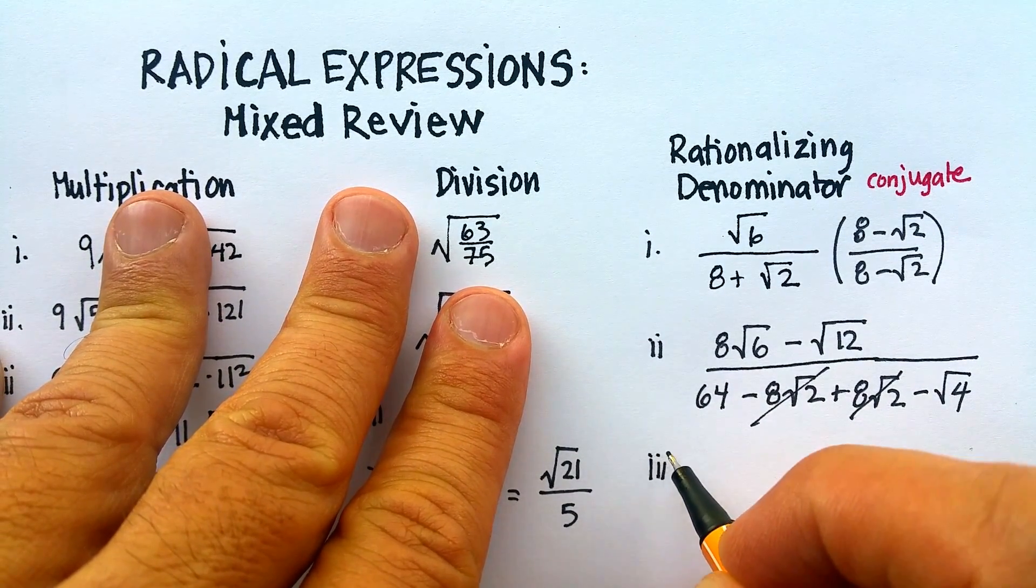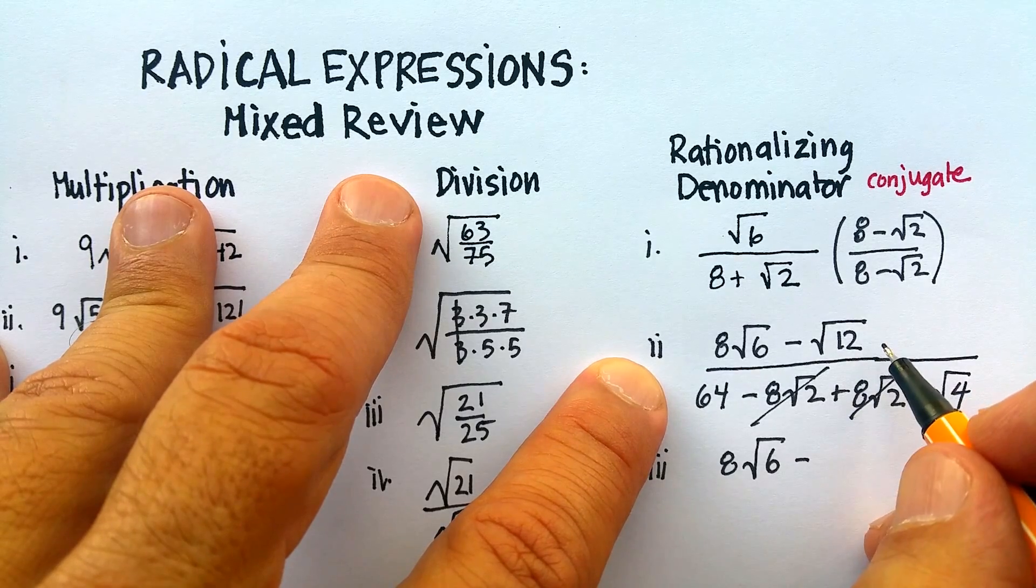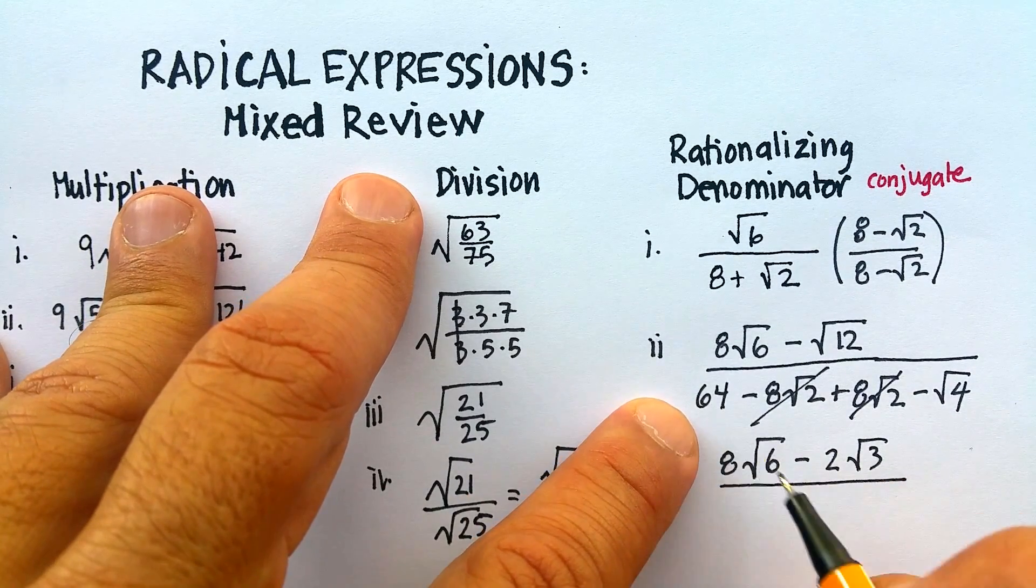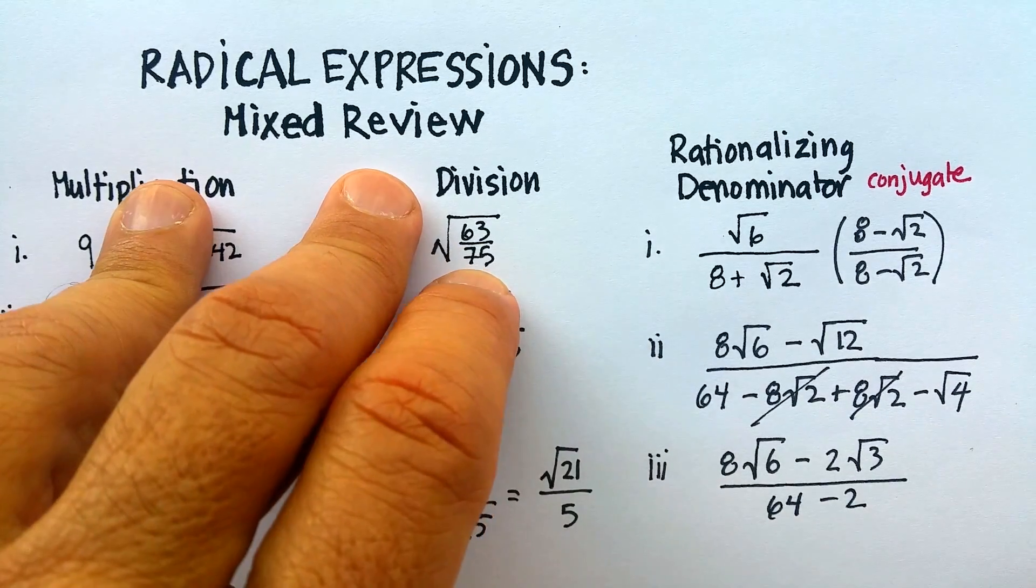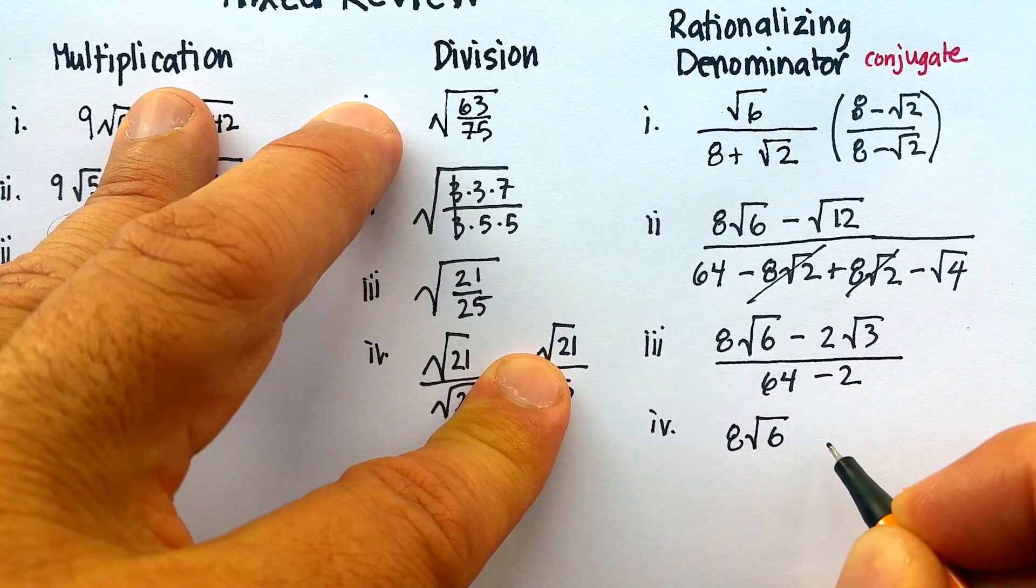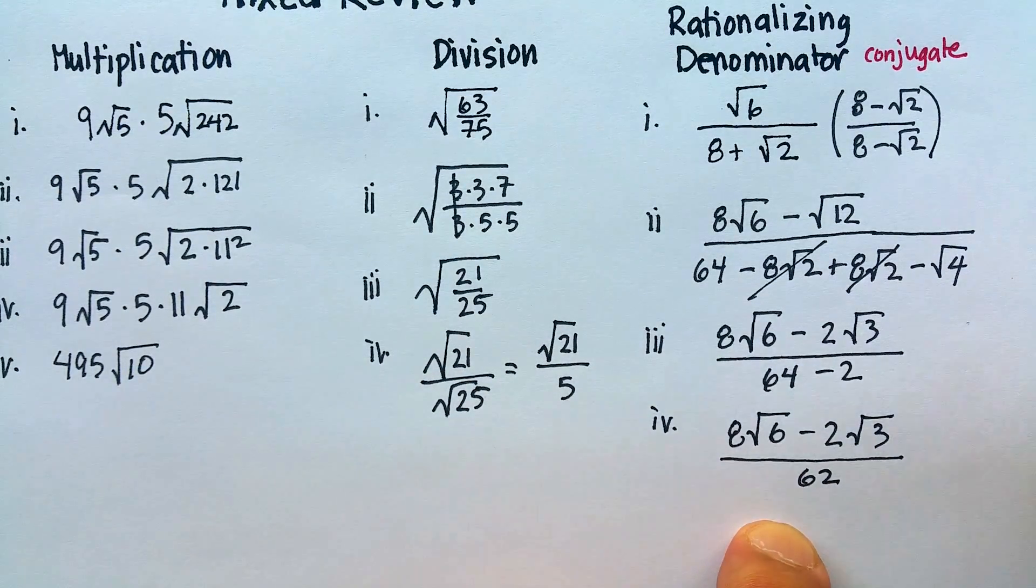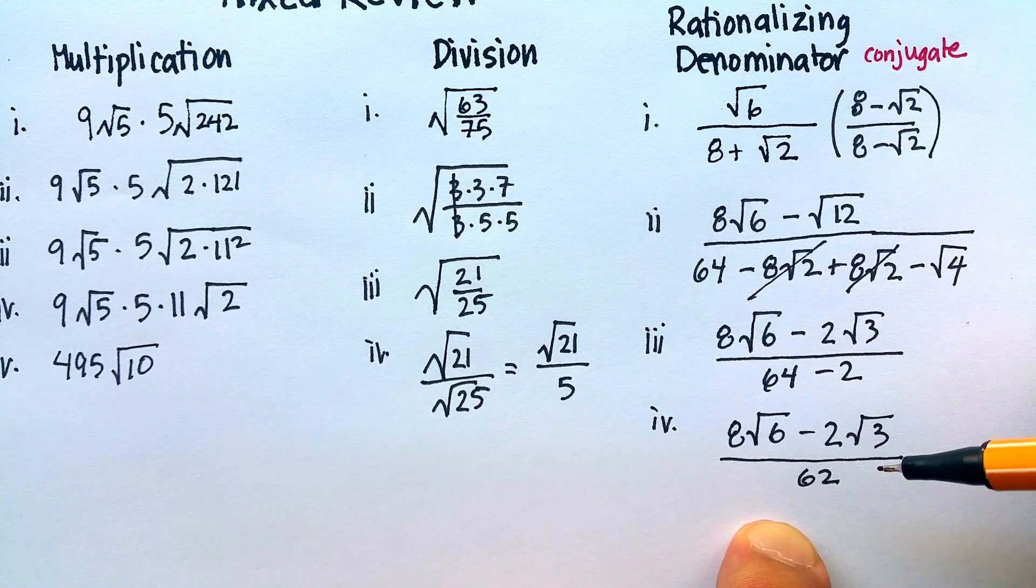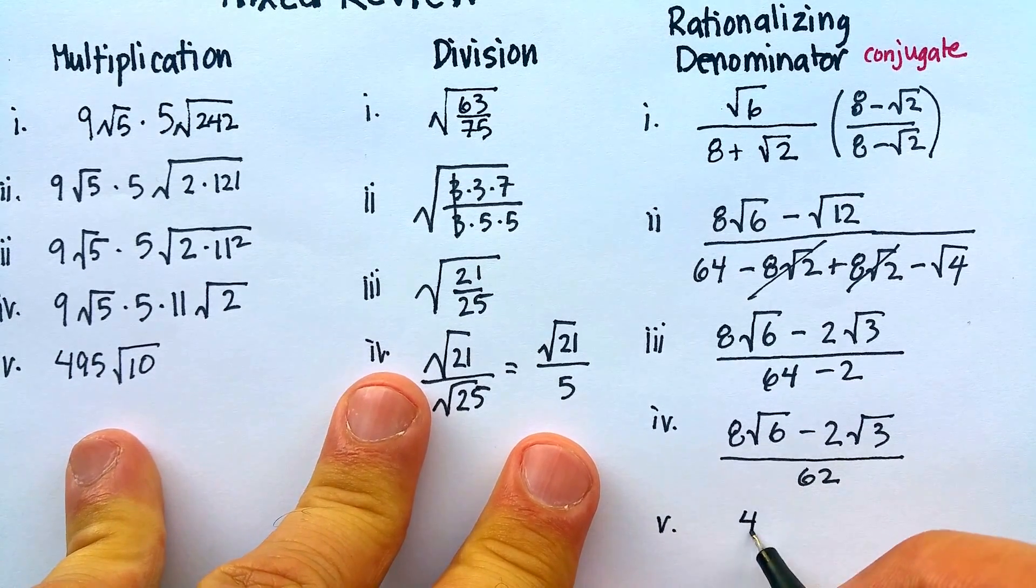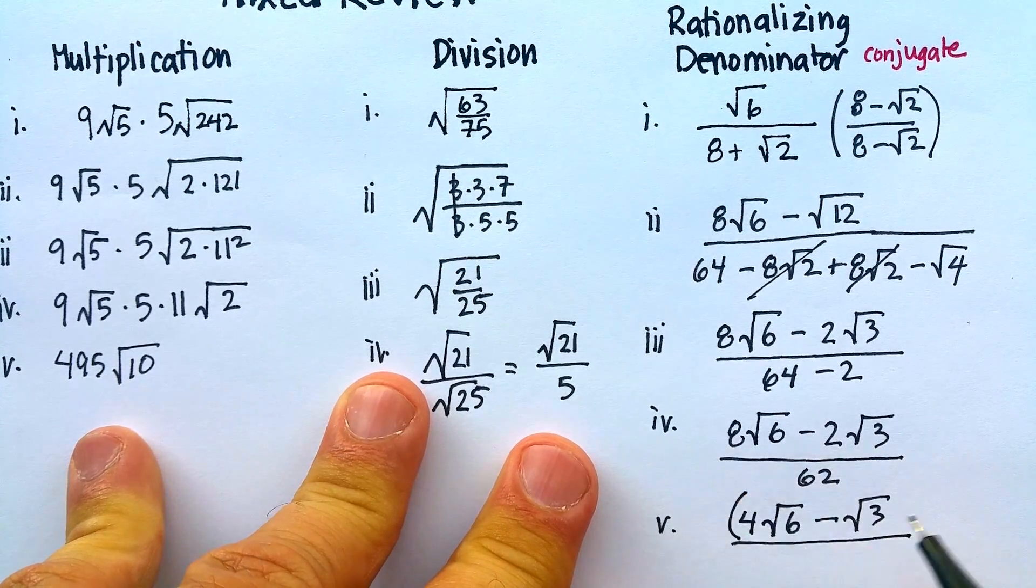Let me just simplify all those in this next step. I've got 8 radical 6 minus, this becomes 2 radical 3, which is 4 radical 3. And this becomes 64 minus 2. Let's just move on now. Now, this becomes 8 radical 6 minus 2 radical 3 over 62. Now, again, whole numbers are all similar, so I can actually reduce those. Let me just factor 2 out of each one of those. And I'm going to end up with 4 radical 6 minus radical 3.